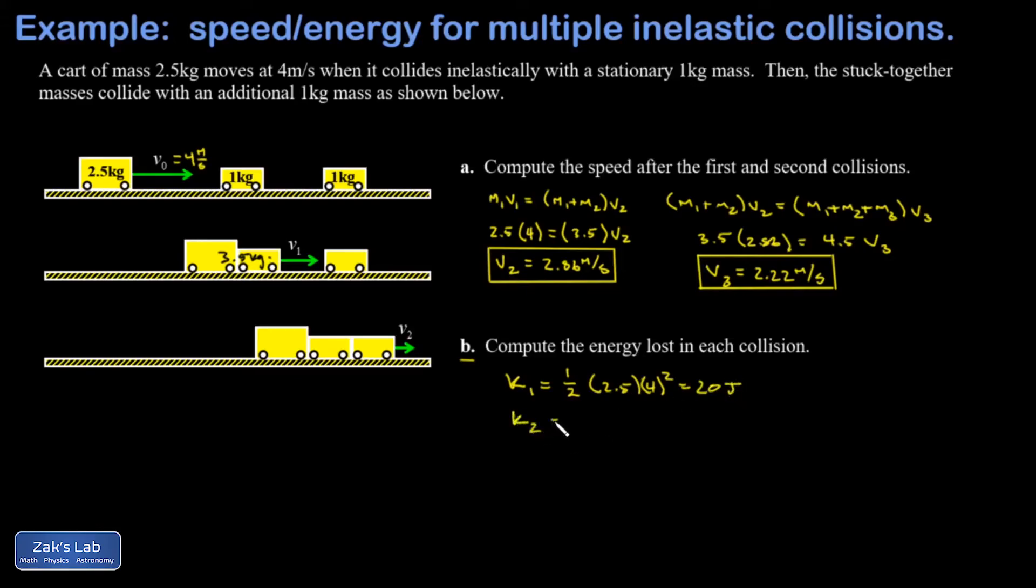Then in the intermediate state, I'll call that K2. I had one half, and I had a mass of 3.5 kilograms moving at 2.86 meters per second. This comes out to 14.3 joules.